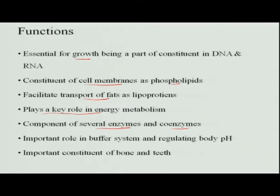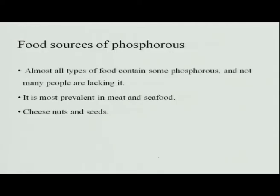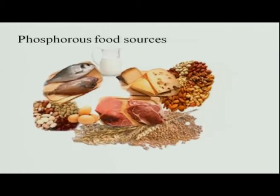Phosphorus is a component of several enzymes and coenzymes, so it is involved in metabolic reactions — getting added and removed. Without phosphorus, metabolism is also deficient. It has an important role in maintaining the buffer system, so acid-base balance is well maintained. Phosphorus is also an important constituent of bone and teeth, present in the form of calcium phosphate. Food sources of phosphorus include meat, seafoods, nuts and seeds, and it is widely present in almost all foods.